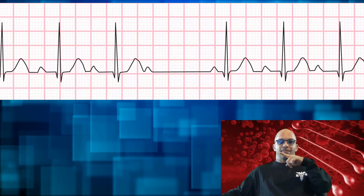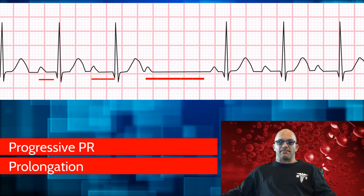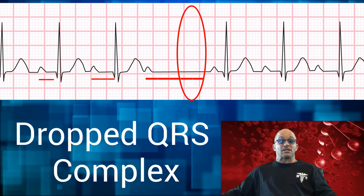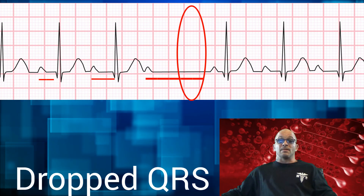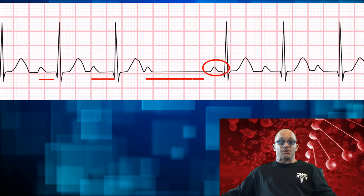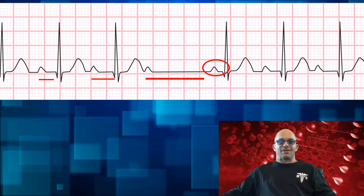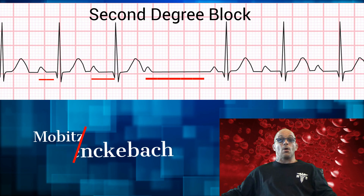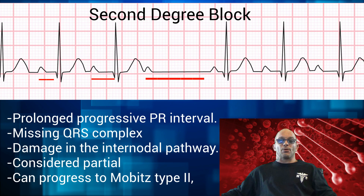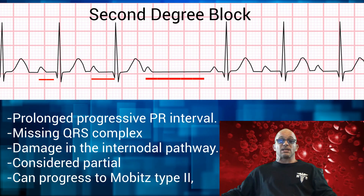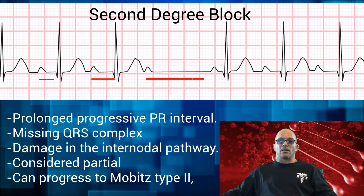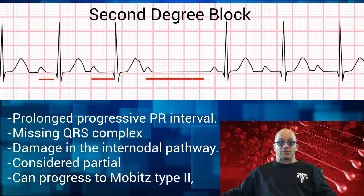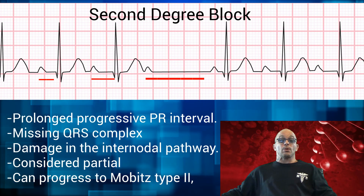In our next rhythm, we note the PR interval is prolonged again, except in this strip each PR interval becomes progressively longer, and by the time we make it to the third P wave, notice there is no QRS complex following it. This is called a dropped QRS complex. It then continues back to another P wave. This rhythm is indicative of a second degree heart block, also known as Mobitz I or Wenckebach. A prolonged progressive PR interval and a missing QRS complex equals second degree block. This can indicate damage in the internodal pathway and is considered partial, and can progress to Mobitz type 2.